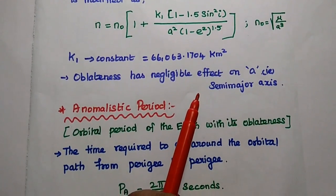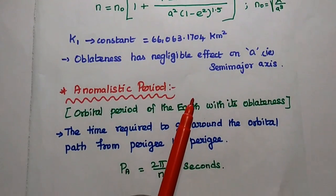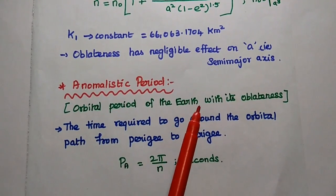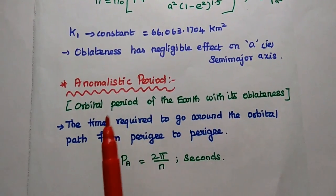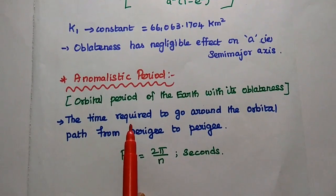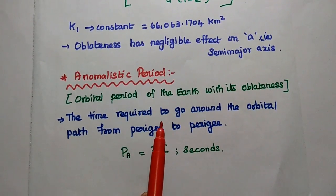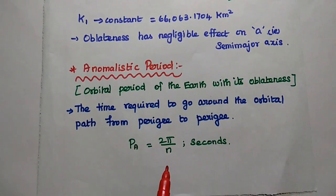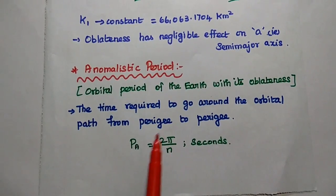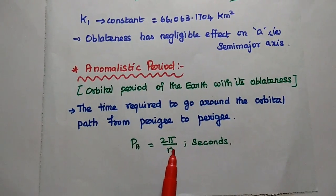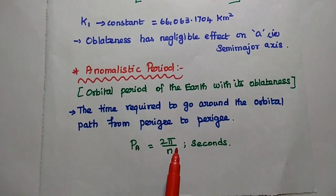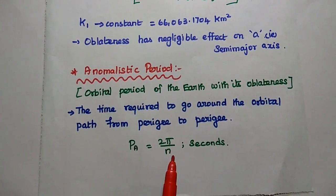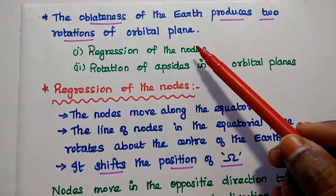The next one is anomalistic period. It is the orbital period with the oblate spheroid effect, defined as the time required to go around the orbital path from perigee to perigee. Its value is given as 2π divided by N seconds, where N is the mean motion and 2π represents the 360 degrees of motion.